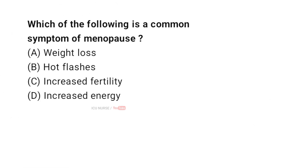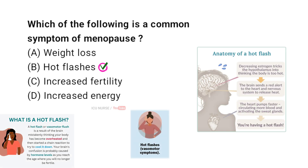Which of the following is a common symptom of menopause? A. Weight loss. B. Hot flashes. C. Increased fertility. D. Increased energy. And the correct answer is B. Hot flashes. Hot flashes, a sudden feeling of heat in the upper body, are one of the most common symptoms experienced by women during menopause.